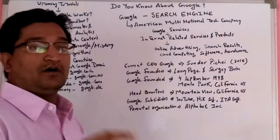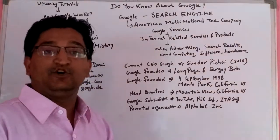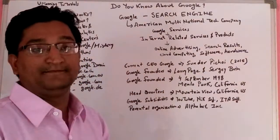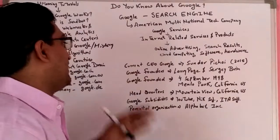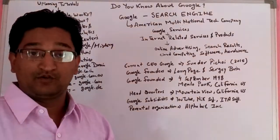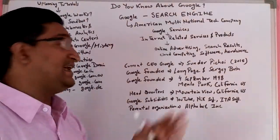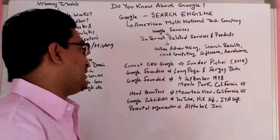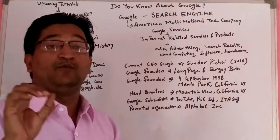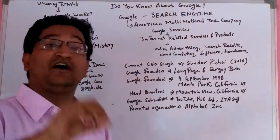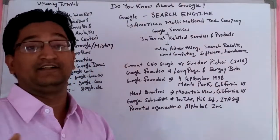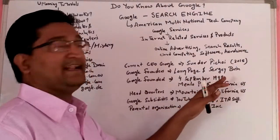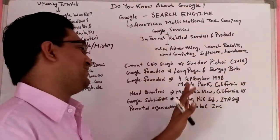Now, who is the current CEO of Google? The current CEO of Google is Sundar Pichai. And if someone asks who are the Google founders, then Larry Page and Sergey Brin are the Google founders. One of the most important questions is when was Google founded? Remember this date: 4 September 1998, Google was founded.